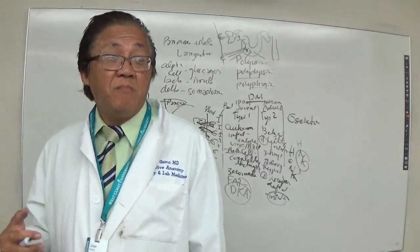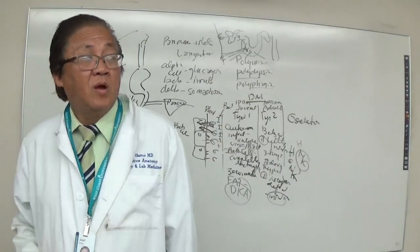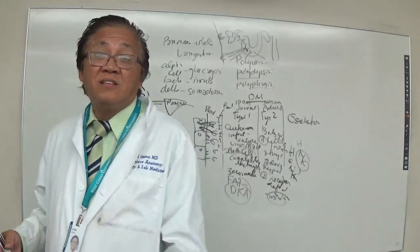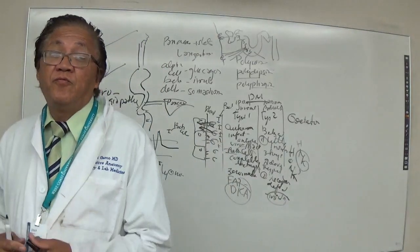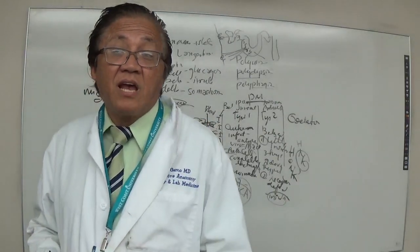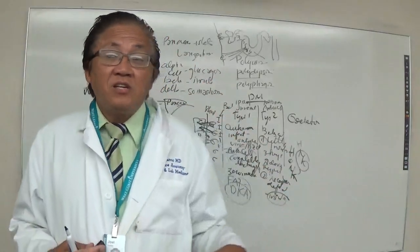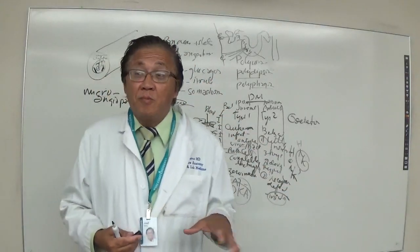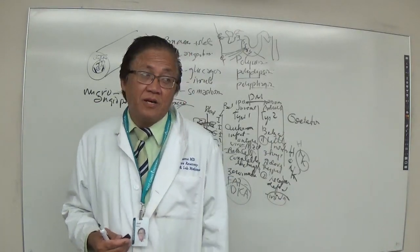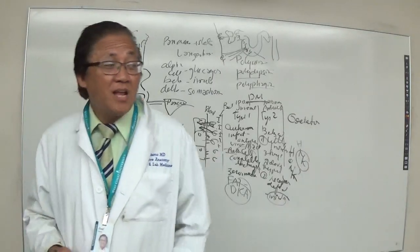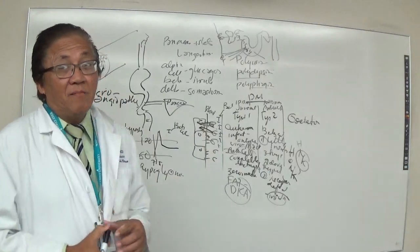For diabetic foot patients with gangrene, we recommend amputation because the gangrene becomes infected, attracting bacteria and causing overwhelming infection. Diabetic patients are usually immunocompromised, so even a small wound in the big toe could be life-threatening.